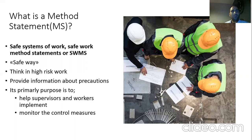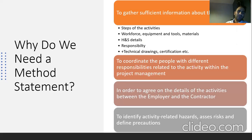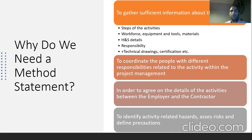The second question is: why do we need method statements? Here are the quick answers. First, to gather sufficient information about the activities, such as steps of the activities and details of sub-activities — workforce, equipment, materials, and other details. Second, to coordinate people with different responsibilities related to these activities within project management. Third, to make an agreement between clients and the principal contractor. Fourth, to identify activity-based hazards, assess the risks, and define the precautions — which is the most important answer.